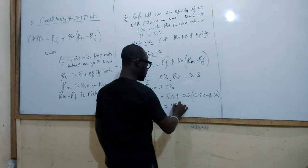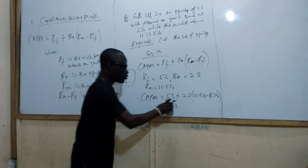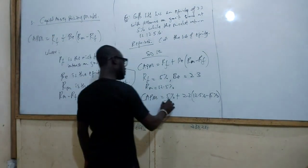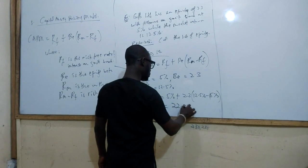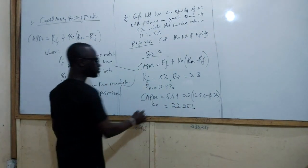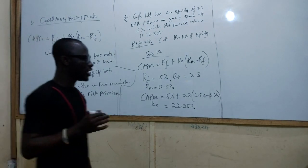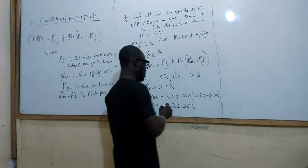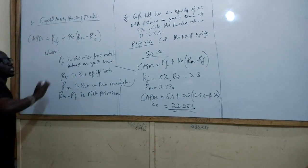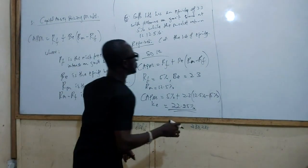Working through the calculation gives us our KE value. That is how the Capital Asset Pricing Model is used.